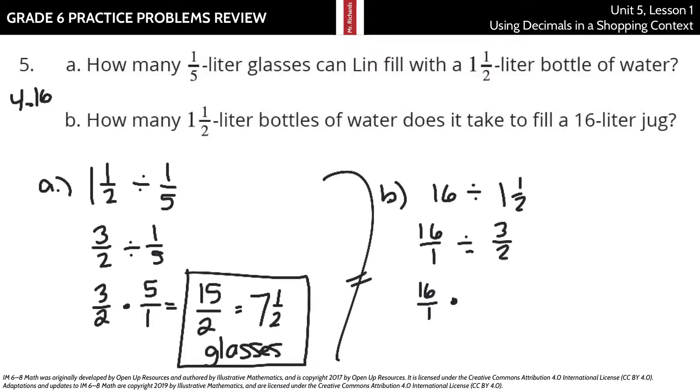We can keep, change, flip, and nothing appears to be able to be simplified here when you look at 2 and 1 and 16 and 3. So just multiply straight across. 16 times 2 is 32. 1 times 3 is 3. Now, that is 10 and 2/3. So you need 32/3 or 10 and 2/3 bottles.